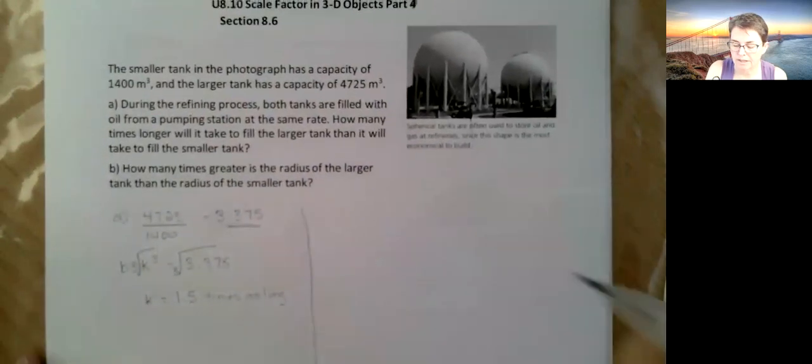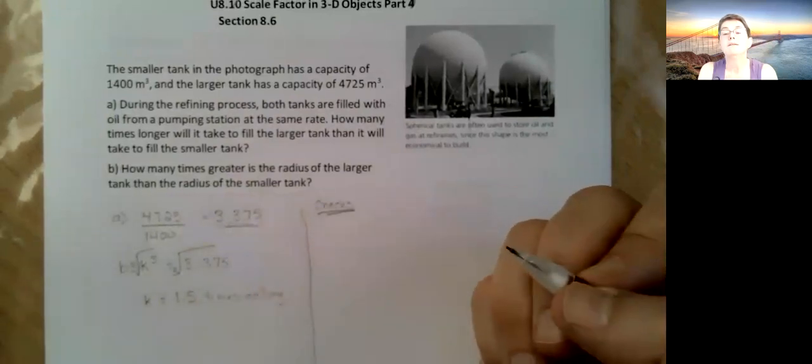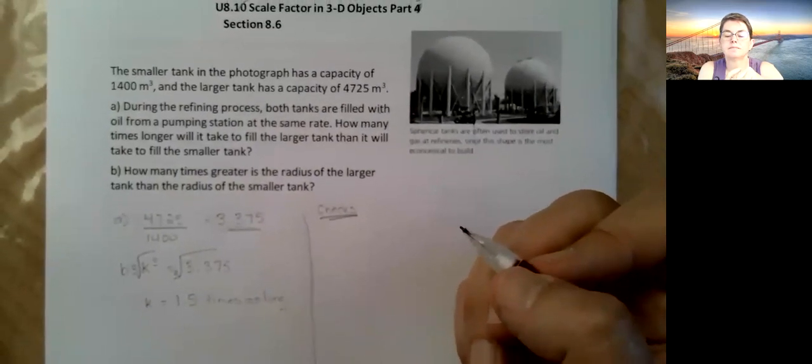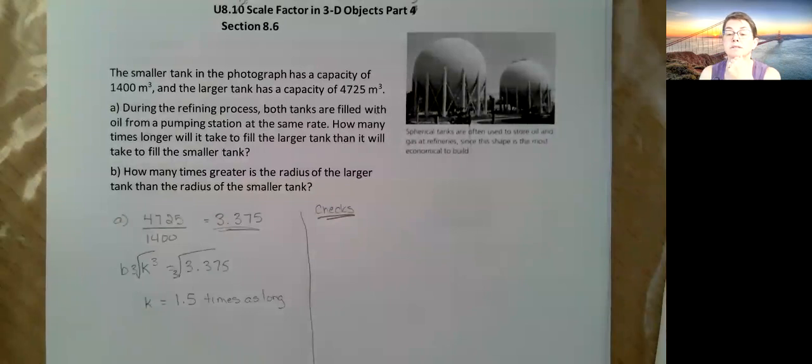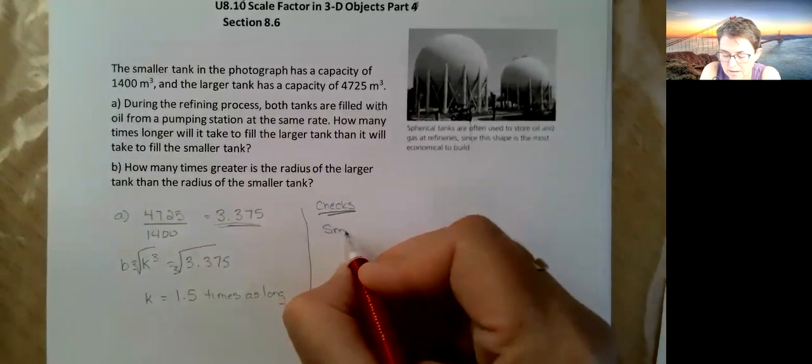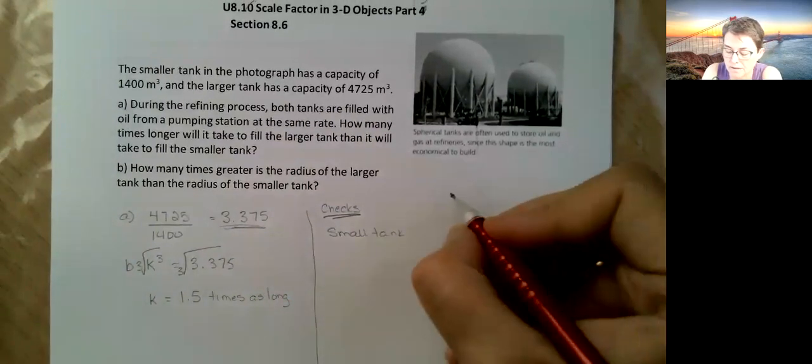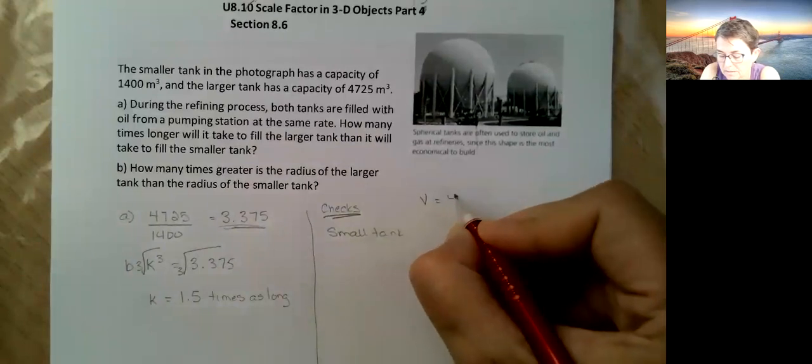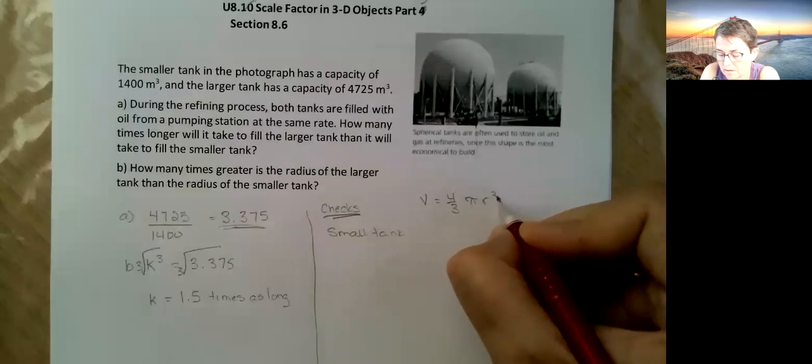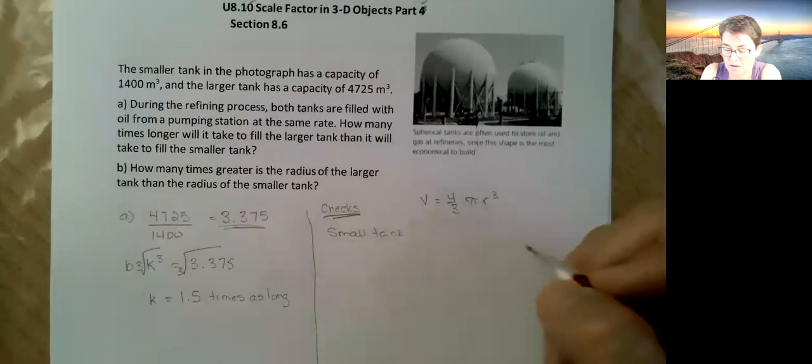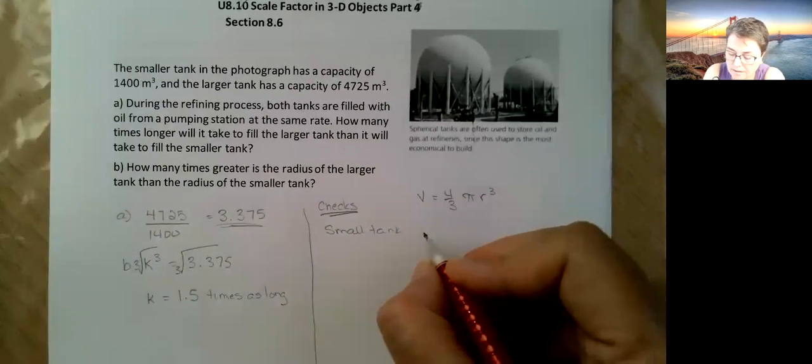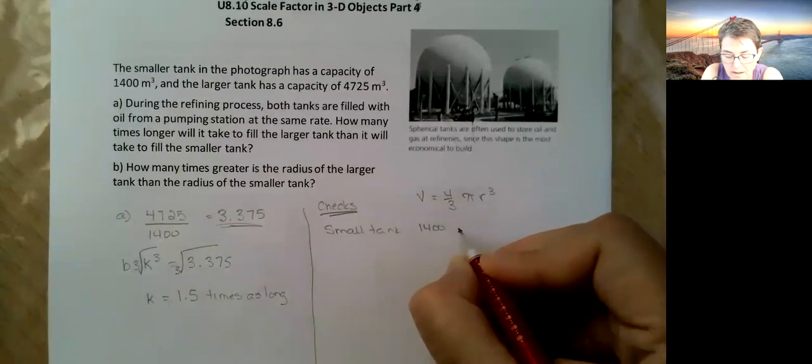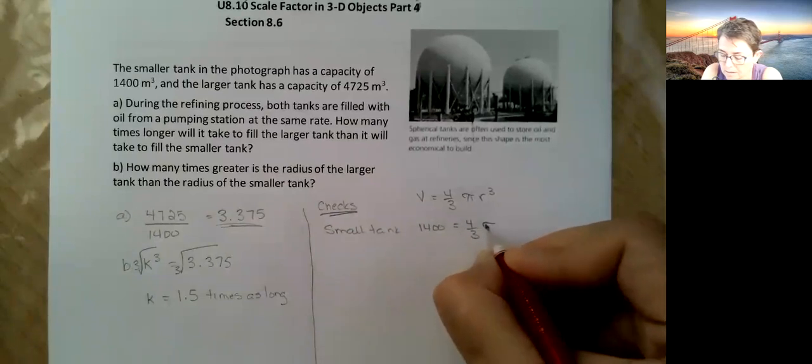Now we're going to do one of the really cool checks. Not required, but there's often more than one way to do a question. Without knowing anything about scale factors, we can figure this out. The one thing you do need to know is the volume of a sphere is equal to 4/3 π r cubed. And we're actually going to use the 4/3 as a fraction because I want my answers to come out nice and exact, so we're not going to change it to 1.3 or something like that.